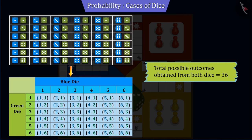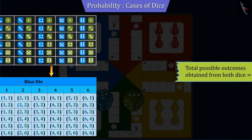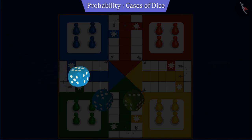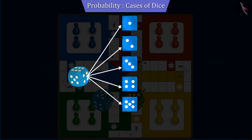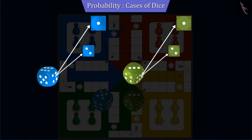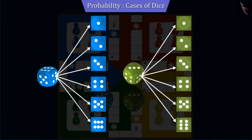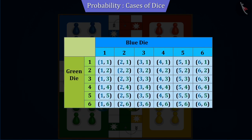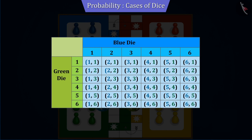But many times students believe that if rolling one die gives 6 outcomes, then rolling two dice together will give 12 outcomes. If you are thinking the same, this is a wrong understanding, because rolling two dice together actually gives a total of 36 possible outcomes.